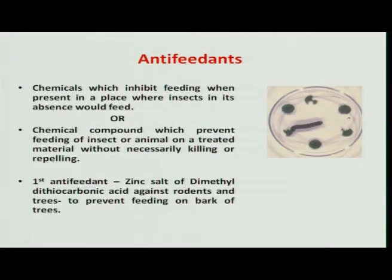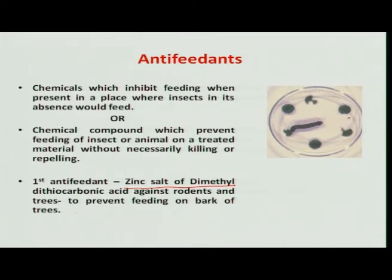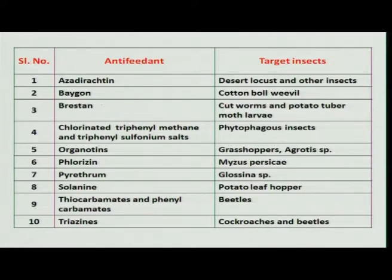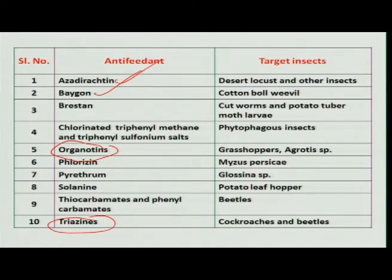Similar to attractants, we have antifeedants. An antifeedant means the treated surface will be avoided by the insect from feeding — the insect can sit on the treated surface but it cannot feed. The first chemical to be released was zinc salt of dimethyl dithiocarbamate, which was used against rodents that feed on the bark of trees. Various antifeedants are available from botanical and chemical sources, including some from groups like argotin and triazines, available for the management of different insect pests.